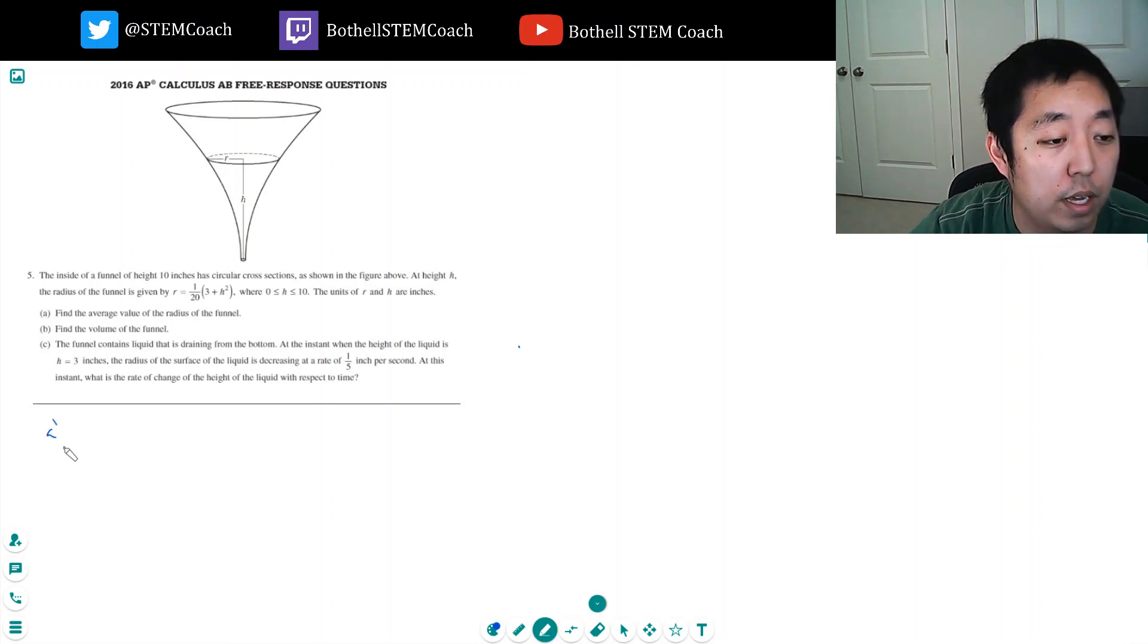Okay, average value of the radius is the integral of the radius. I'm going to go r of h dh from 0 to 10 over 10 minus 0. It's always like you're going to do the area under r of h or the thing and divide it by the width of the interval.